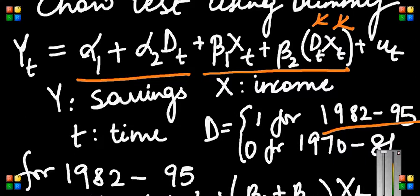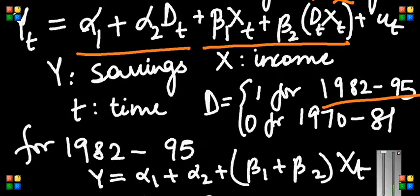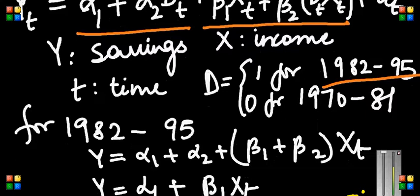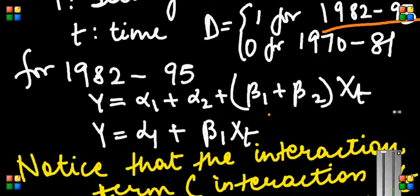For 1982, my equation becomes α_1 + α_2 (instead of D_t I put 1) plus β_1 + β_2 (instead of D_t I again put 1) X_t if you can see this. For 1970-81, my equation becomes α_1 + β_1 X_t putting D equal to 0.